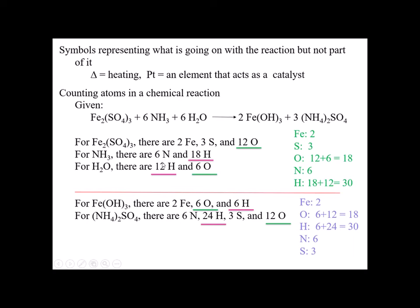Even though I have three compounds, I only have five different elements present. Iron is only in one spot: two. Same thing for sulfur. Oxygen appears both in iron(III) sulfate and in water, so there are 12 oxygens from iron(III) sulfate and six from water — 12 plus 6 gives me 18 total on the reactant side.